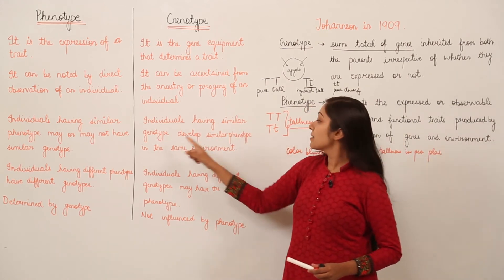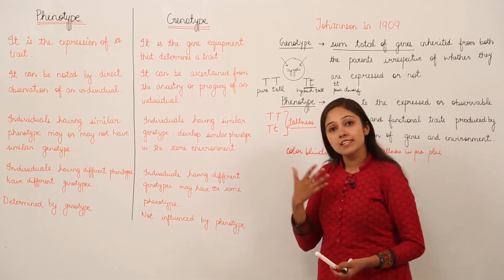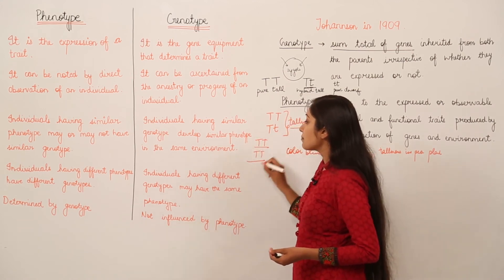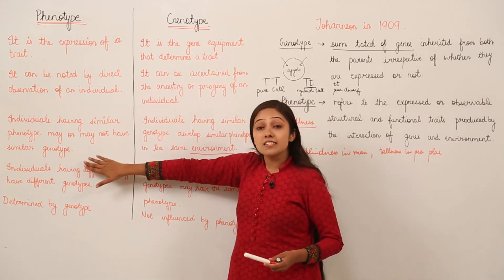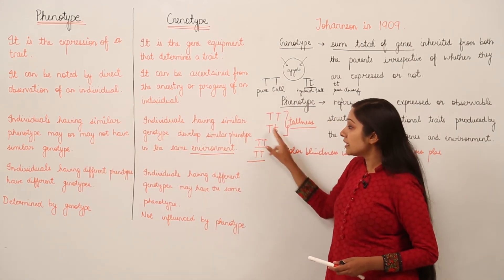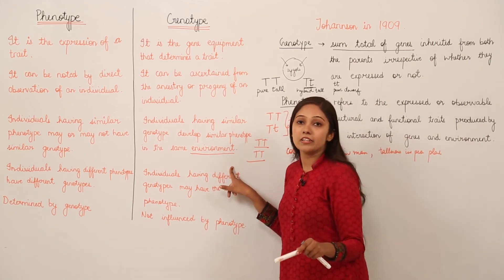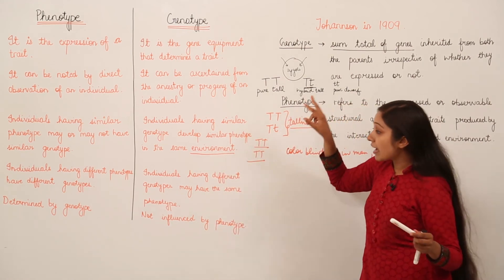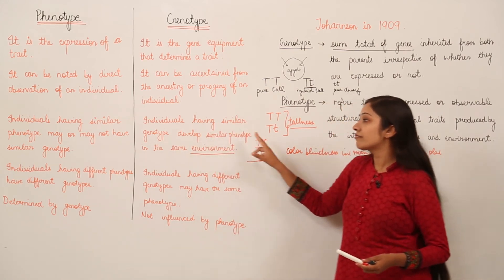Individuals having similar genotype develop similar phenotype in the same environment. If the genotype is the same, the phenotype is going to be the same. The word 'environment' is mentioned because phenotype does depend on environmental conditions, whereas genotype does not. So if individuals have similar genotype and are in the same environmental conditions, the phenotype is definitely going to be the same — as illustrated by the skin tanning example.